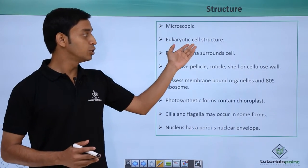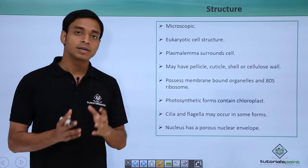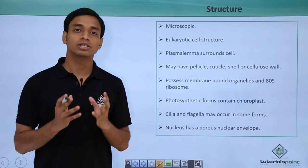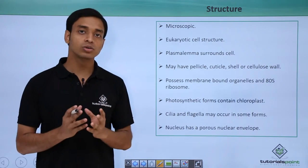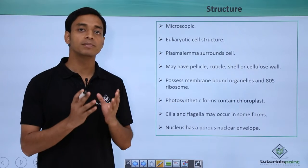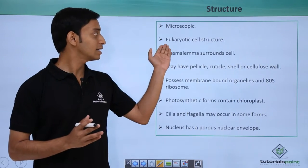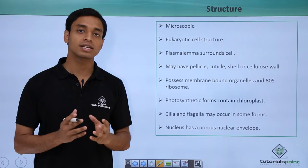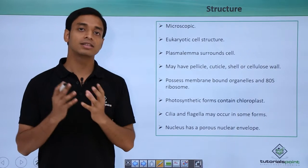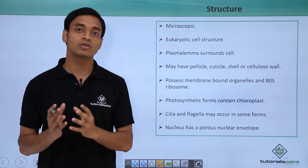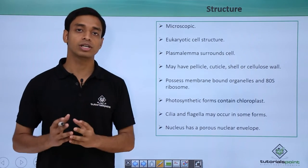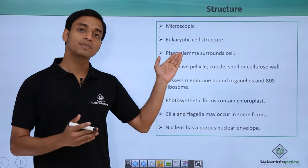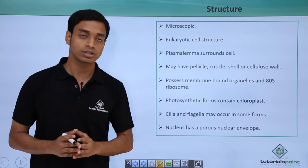Now they are eukaryotic cell structures. Before this we have talked about the Kingdom Monera which included only Prokaryotes. These are eukaryotic cell structures, which means unlike the Prokaryotes which do not have a true nucleus, here the Protists have got a true nucleus.